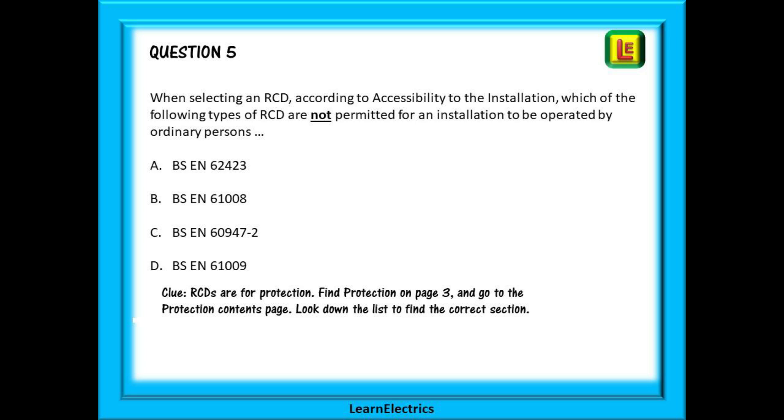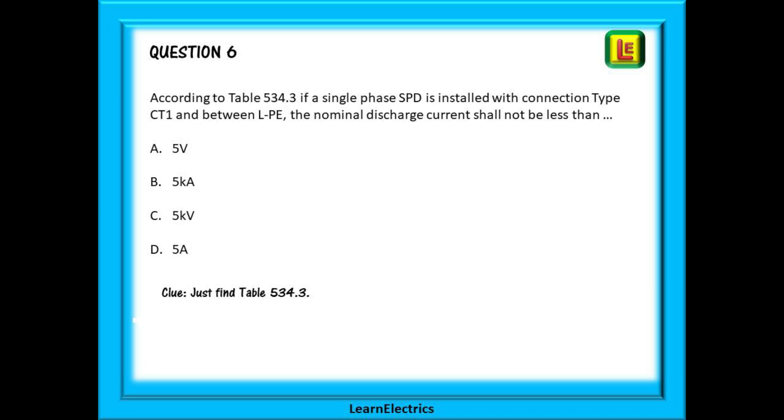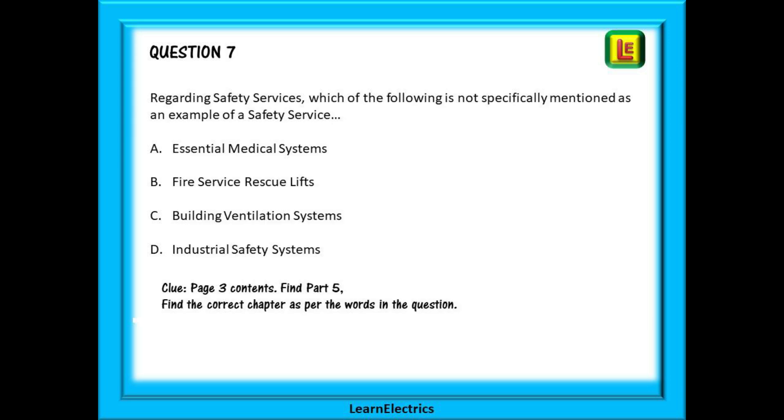This question, question 5, is about RCDs. RCDs are for protection so find protection on page 3 and go to the protection contents page. Look down the list to find the correct section. Question 6 tells you exactly which table to go to. All you need to do is to interpret the information.